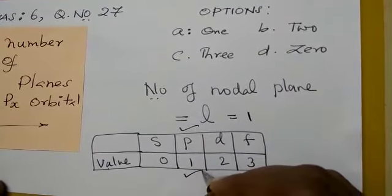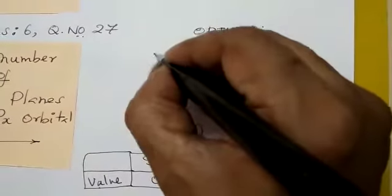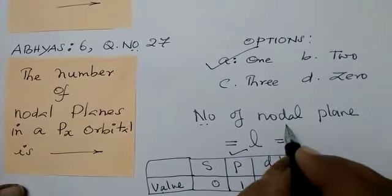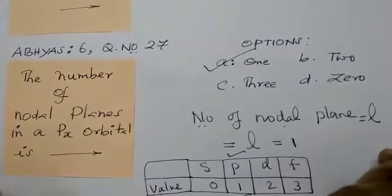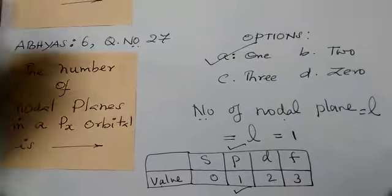So its azimuthal value is 1. So your answer is 1. Here the trick is number of nodal plane is equal to azimuthal quantum number. That trick itself is enough. We are coming to the next question.